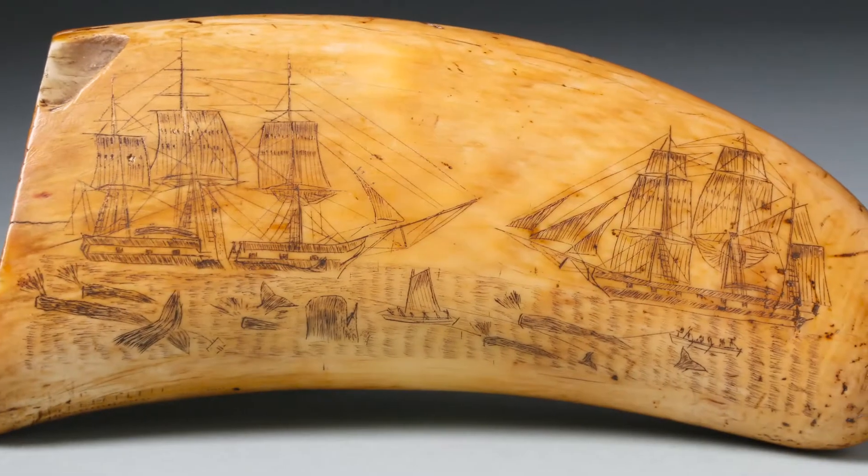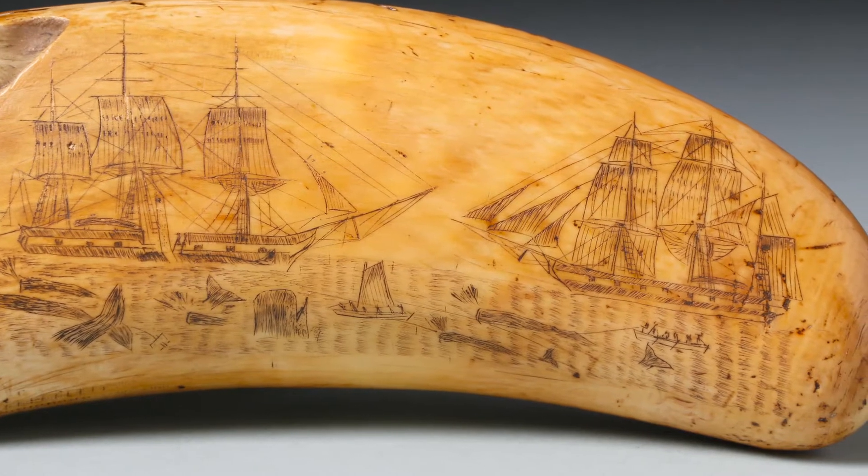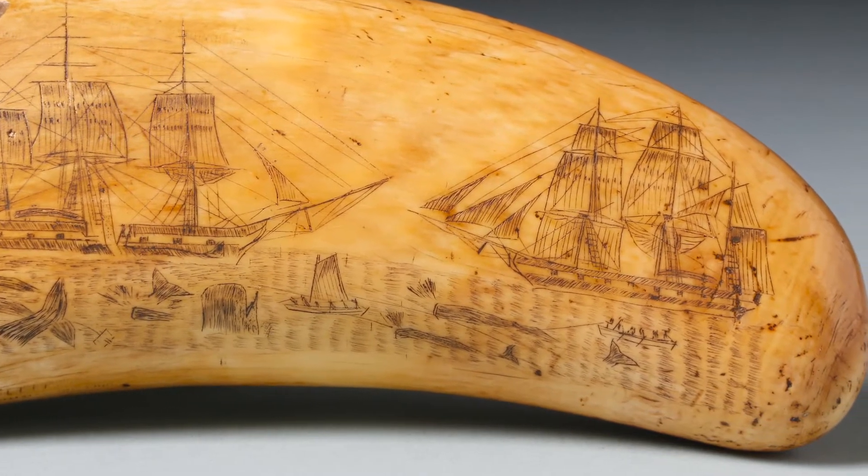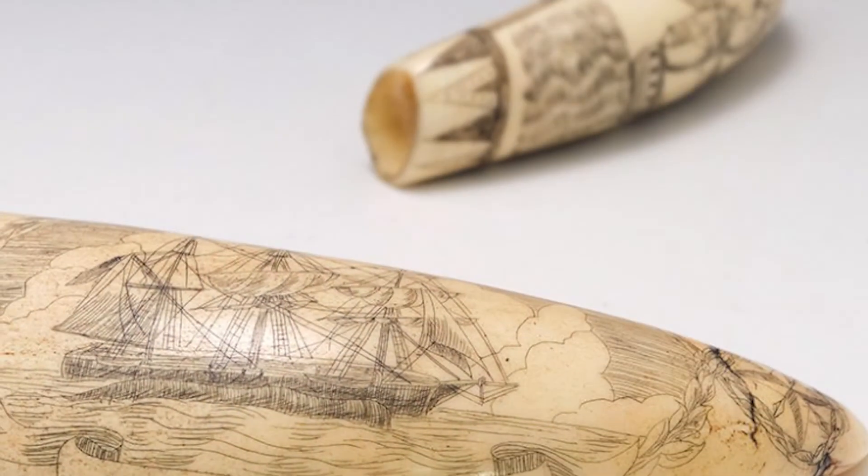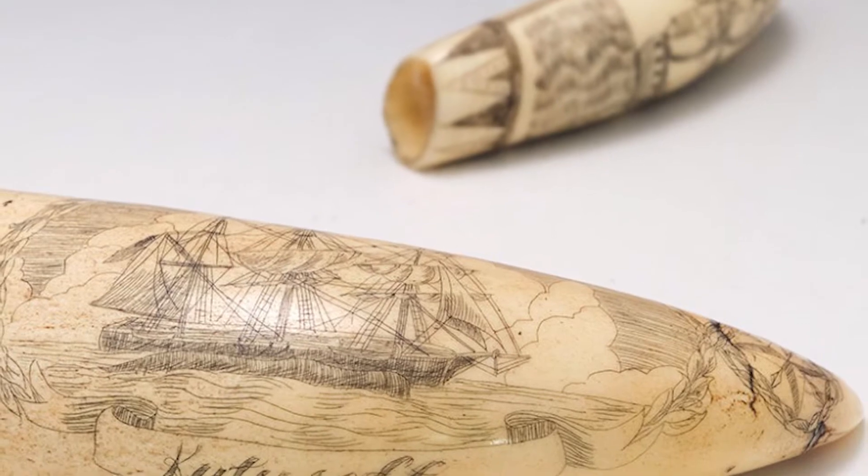This technique is actually what is called scrimshaw and it's descended from 18th century whalers. They would carve into either bone, ivory, some other form of element, certain pictures, often maritime themes or women or something having to do with the ocean or their way of life.